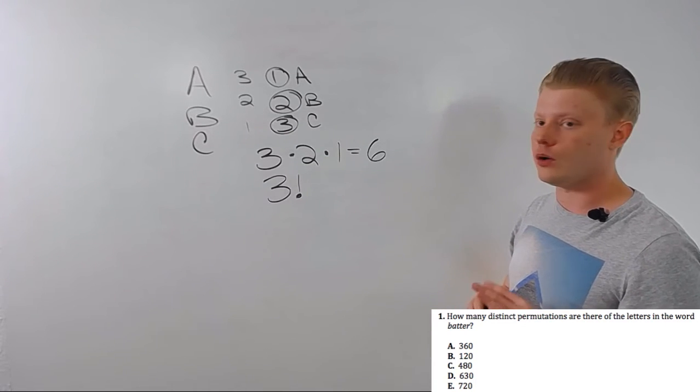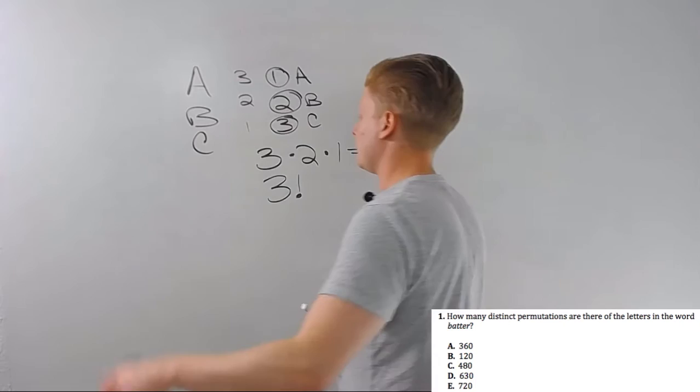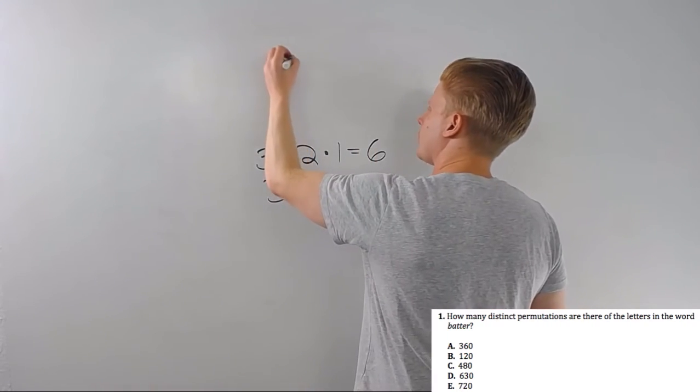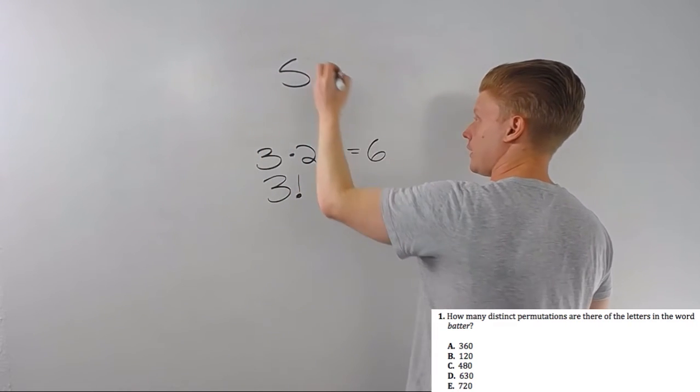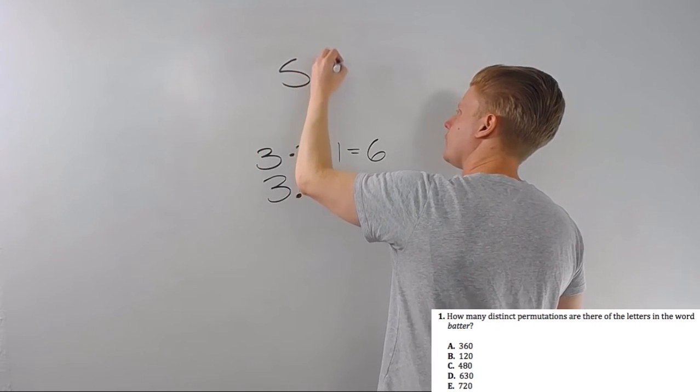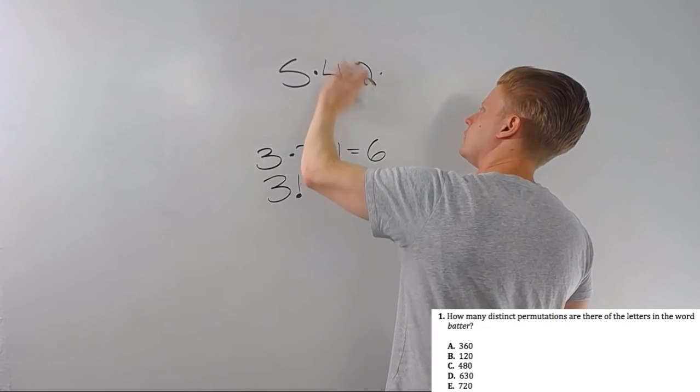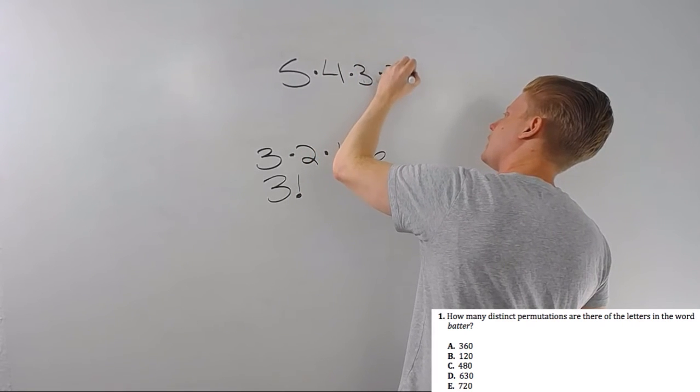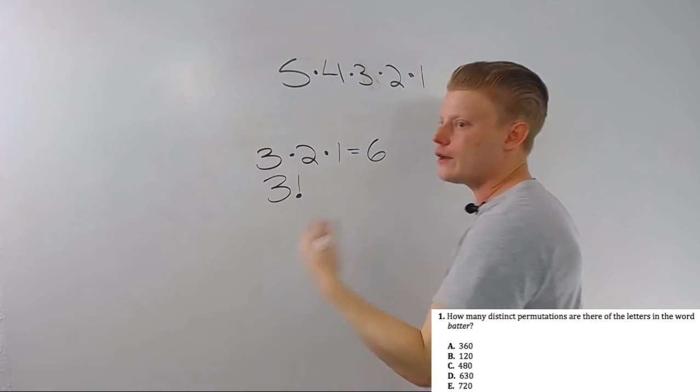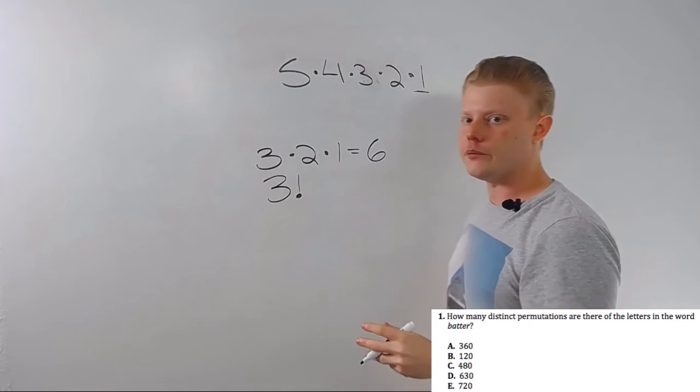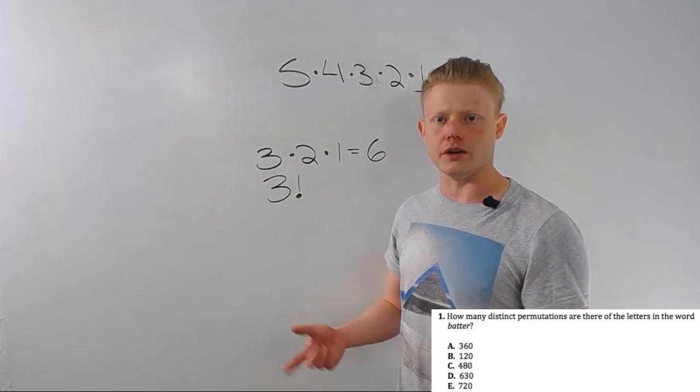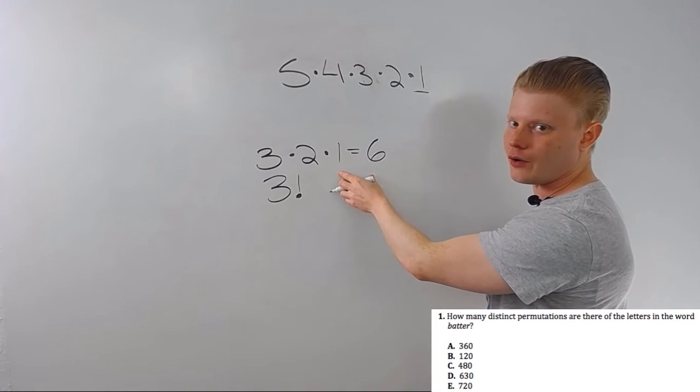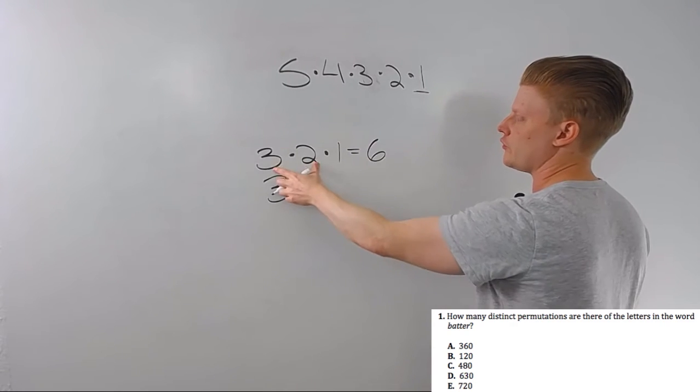A factorial always works like this. And let's do a different number just for an example. Let's say we have five factorial. So it'll be the number, right, just like we have in front of the exclamation point, times one less than the number, times two less than the number, times three less than the number, times four less than the number, and on and on and on until we get to one. We stop at one because otherwise we have zero and then it'll be zero.